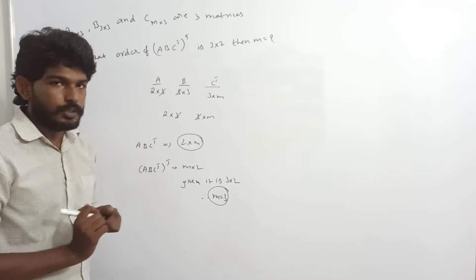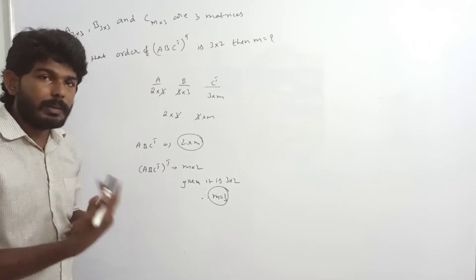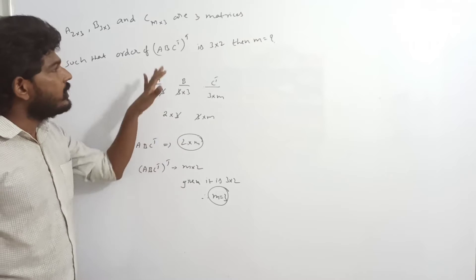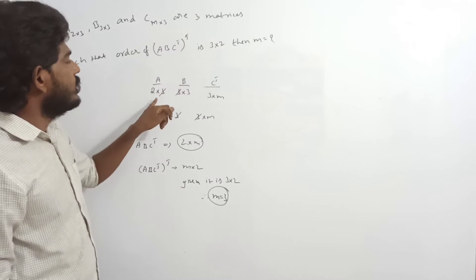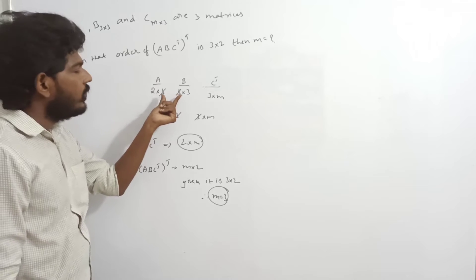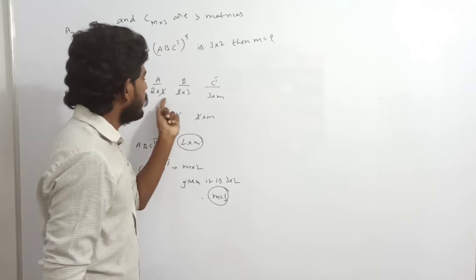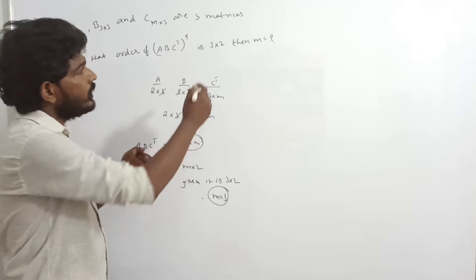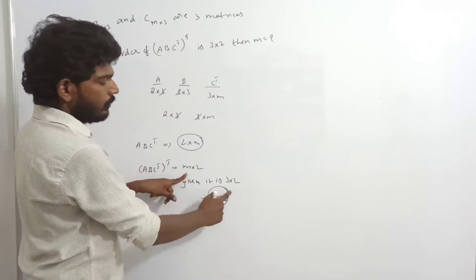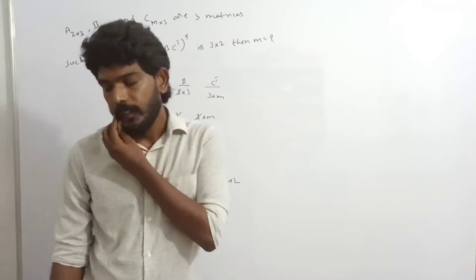Simple question. We used the concept of multiplication. ABC transpose is 2 by M, and its whole transpose is M by 2. Given it is 3 by 2, so M is 3.